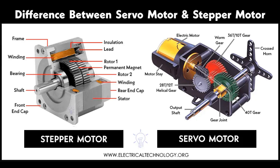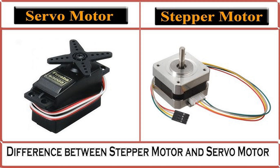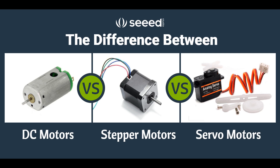In commercial applications, AC motors power elevators, escalators, and moving walkways in commercial buildings and public transport systems. They are crucial for operating fans, blowers, and compressors in HVAC systems. AC motors are also used in industrial ovens for food processing and manufacturing to drive fans that circulate air and maintain consistent temperatures.